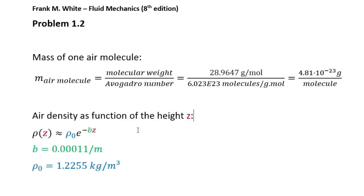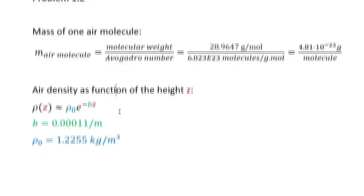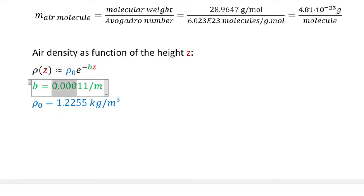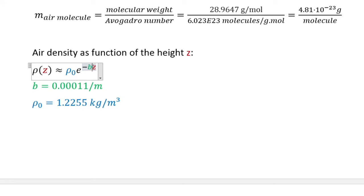What the problem doesn't give us is this function here, which is a good estimate of the air density as a function of height. It's an exponential function. We have two constants: ρ₀, which is the standard density of air, and B, which is equal to a specific value here. In order to have dimensional consistency, B must have units of inverse meters, so that the meter cancels with meter in the exponent, making that term dimensionless. And ρ₀ has units of kilograms per cubic meter.